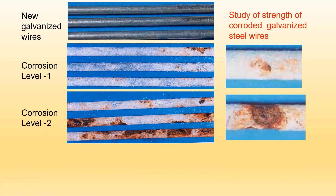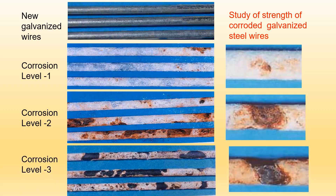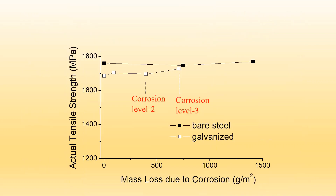This is corrosion level 2 — brown ferrous rust occurs locally. This is corrosion level 3 — corrosion further progresses and ferrous rust spreads widely and deeply. We carried out tension tests. This shows the actual tensile strength, obtained by dividing the applied tension by the actual cross-sectional area considering the depleted area due to corrosion.